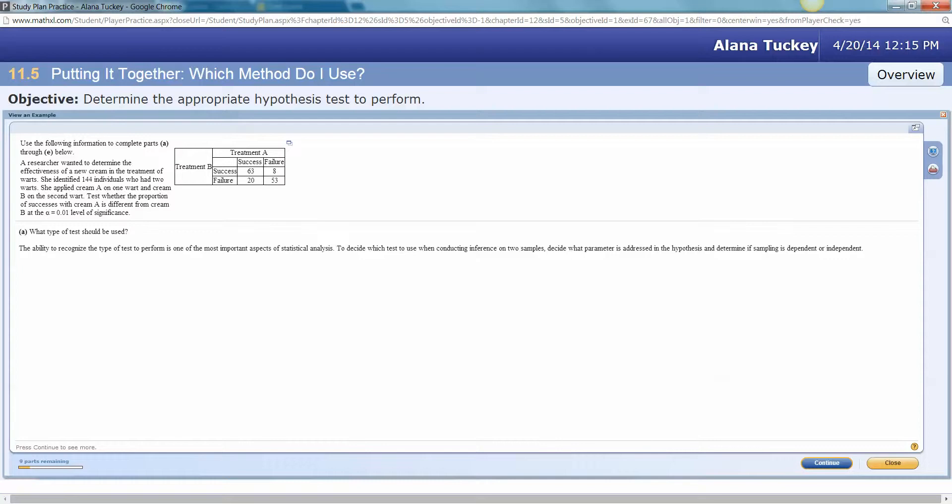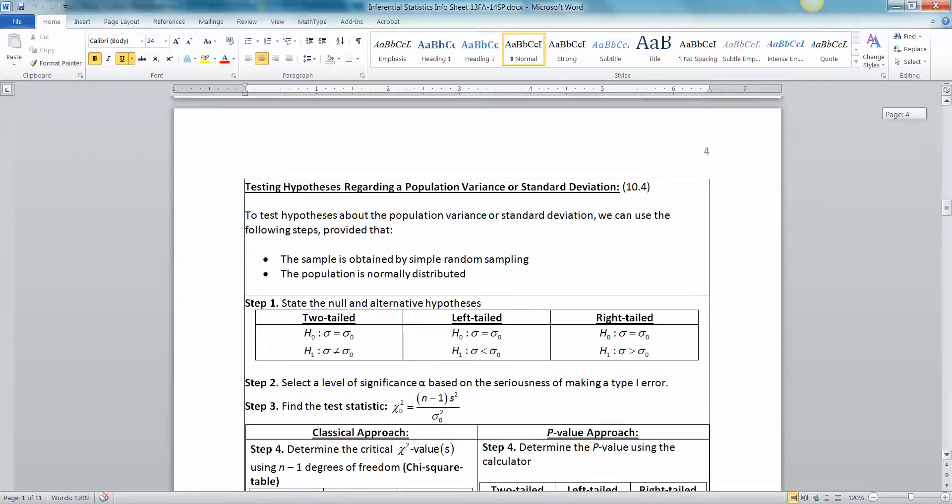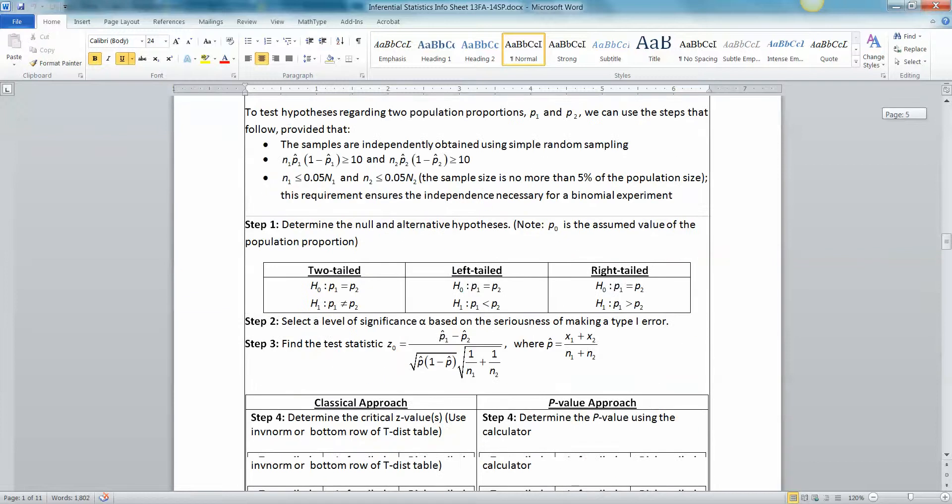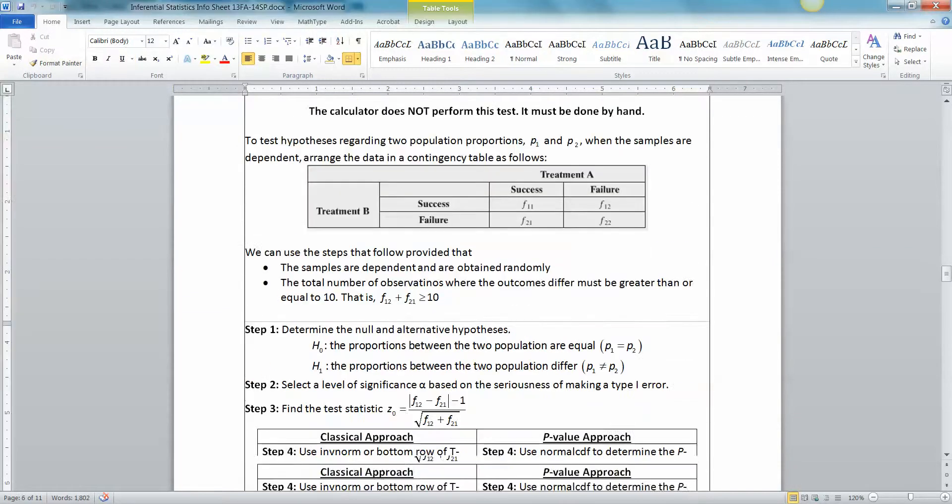Okay, so first of all, you have to know what kind of test this is. You're talking about proportions, right? So two different proportions, proportion A and proportion B, proportion for cream A, proportion for cream B. And they're dependent because it's one group of people that are receiving both treatments. So that's a dependent sample proportion test, which would be that one, right here.